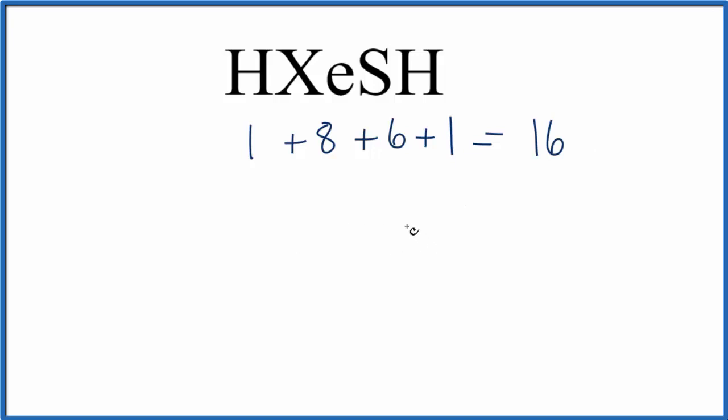So we'll put the least electronegative elements in the center. Hydrogens always go on the outside and in fact this is a fairly linear molecule. We can see the way it's written is the way it's intended to be drawn as a Lewis structure. So we can just put HXeSH.